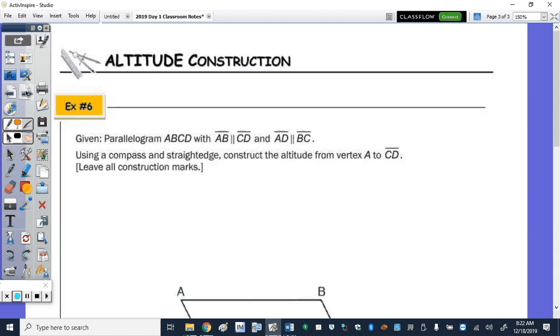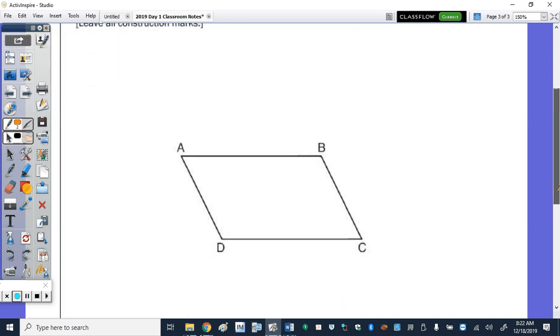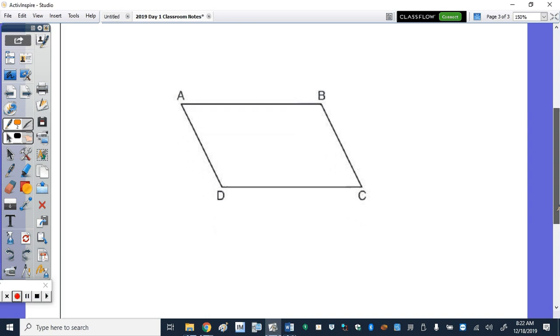Alright, the construction. We are given parallelogram ABCD with AB parallel to CD and AD parallel to BC. Using a compass and straightedge, construct the altitude from vertex A to CD. So an altitude is drawn perpendicular to the side it's drawn to. So we just need to do a line perpendicular to CD through A. So remember the perpendicular line construction.